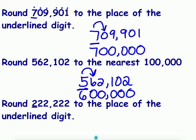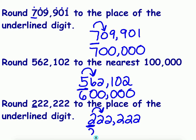Round 222,222 to the nearest hundred thousand. The place is already found. Look to the right — five or more? No. Four or less? Yes — let it rest. The two gets to stay. Look to the right, there are zeros in sight. So 222,222 rounded to the nearest hundred thousand is 200,000.